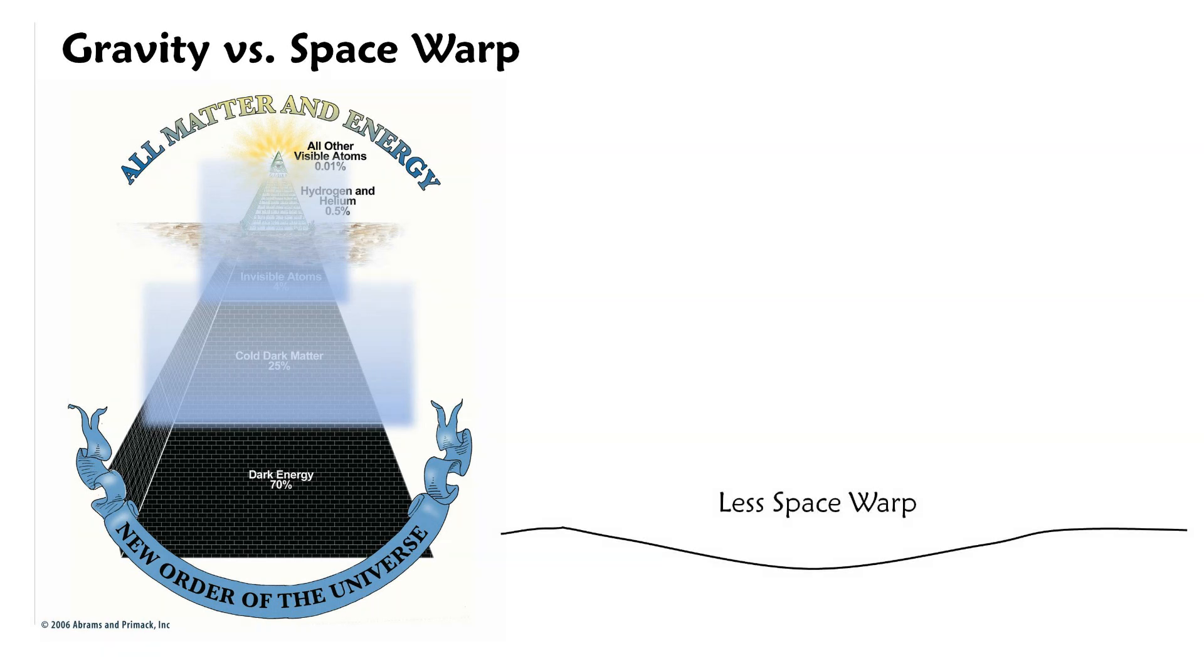Following our argumentation, the only thing required for expansion is a reduction of space warp. This is like a blanket on your table with a lot of wrinkles in it that you straighten out. And we assume expansion might be a reduction of space warp.